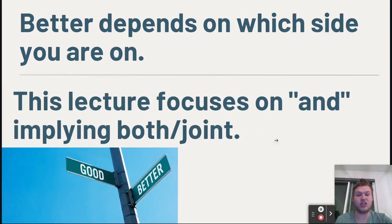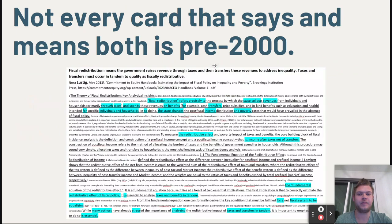Which direction is better depends on what side you're on. My personal preference and the focus of this lecture is on the more limited version of the topic, with 'and' implying both — joint. I'm mostly focused on policies that both tax the rich and transfer the funds from that tax to the poor. A lot of people say the evidence for the 'both' interpretation is from the 80s, but I think there's a really recent card that does a great job explaining that it makes sense for fiscal redistribution to require both.